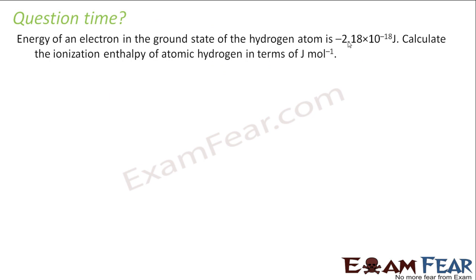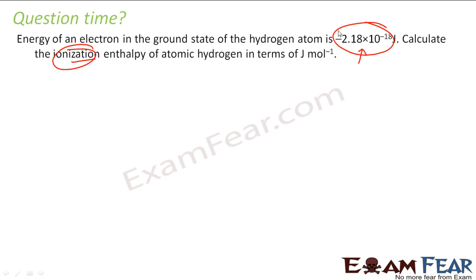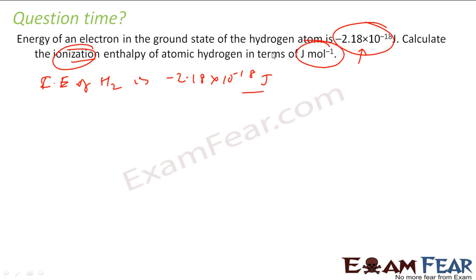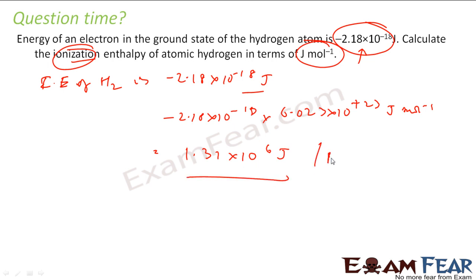The energy of an electron in the ground state of hydrogen is –2.18 × 10⁻¹⁸ joules. Calculate the ionization enthalpy of hydrogen. In the ground state, if this is the energy, then this much energy is required to remove one electron. So the ionization enthalpy of hydrogen is 2.18 × 10⁻¹⁸ joules per atom. Since the question asks for joules per mole, we multiply by Avogadro's number: 6.023 × 10²³. When you solve this, you get 1.31 × 10⁶ joules per mole. That is the answer.